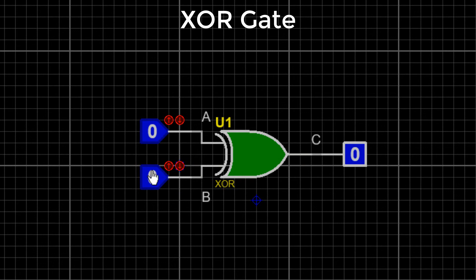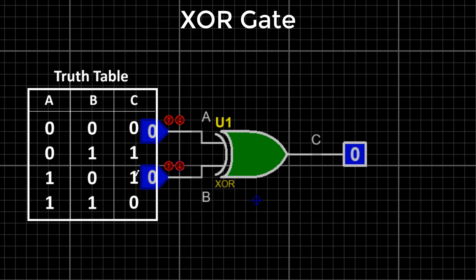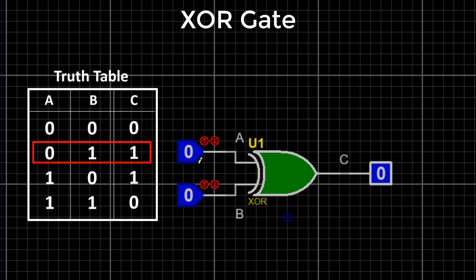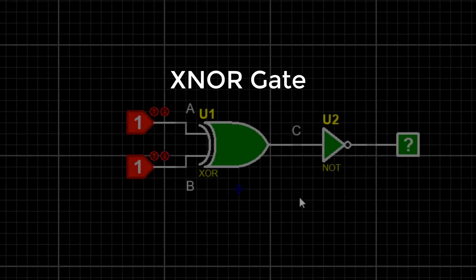XOR gate: The XOR gate is an electronic circuit that gives a high output — one — when both its inputs are not the same, and gives a low output when both inputs are the same, either both high or both low. In boolean expression, a plus with a circle sign is used. Applying inputs: zero and zero gives zero; zero and one gives one; one and zero gives one; one and one gives zero.